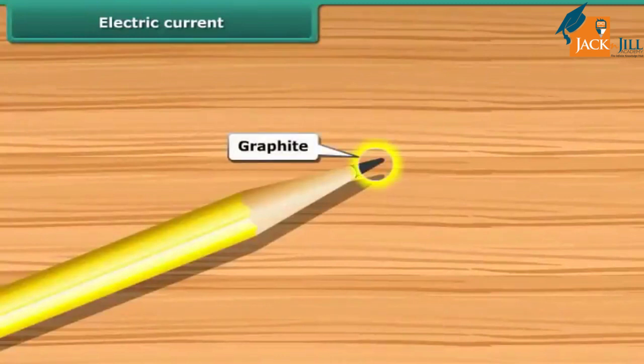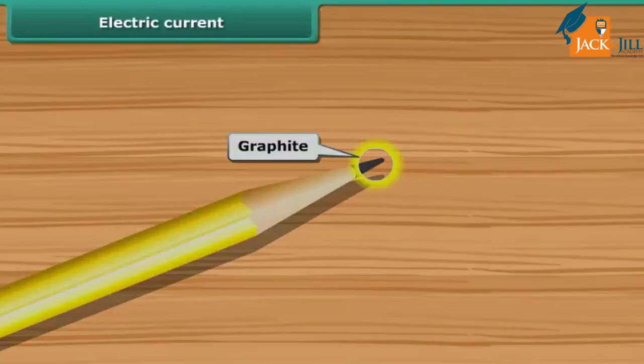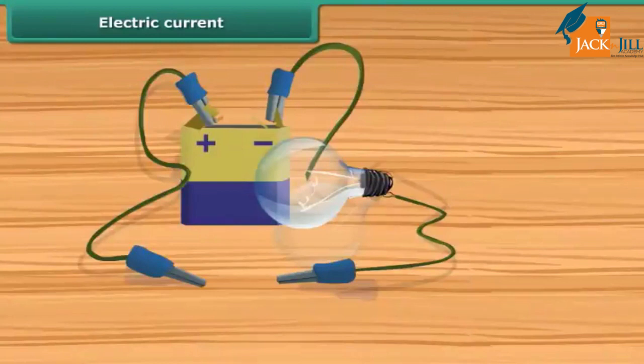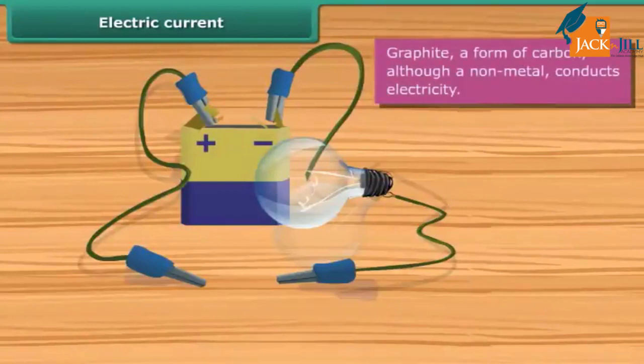It is a form of carbon. It is non-metal but it is a conductor of electricity. It can be tested whether a given material is a conductor of electricity or not. Place the given material between the free ends of wires in an electric circuit.